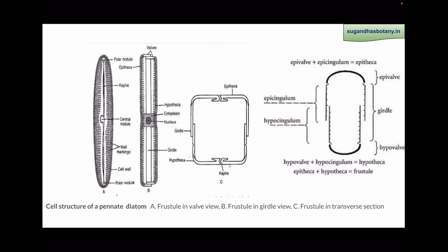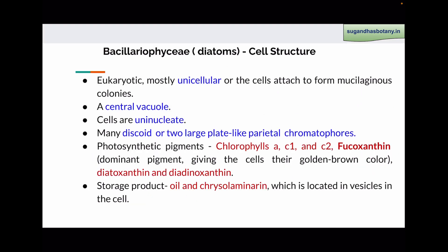The outer part of the cell wall is known as epitheca and the inner one is known as hypotheca. The epitheca has a valve which is known as epivalve, and the rim of the epitheca is known as episingulum. Similarly, the valve of hypotheca is known as hypovalve, and the rim of hypotheca is known as hyposingulum. The overlapping parts of episingulum and hyposingulum make the girdle. So the rim portion of epitheca overlaps the rim of hypotheca, forming a girdle.